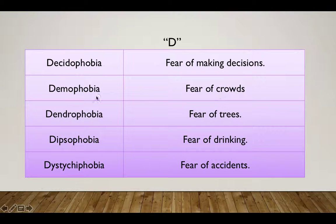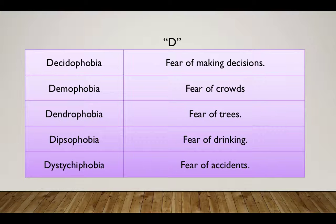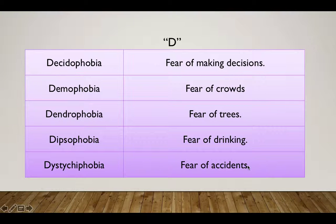Demographic dividend — you may have heard this term, which relates to people who can be put to work — so demographic relates to people and crowds, hence Demophobia is fear of crowds. Dendrophobia — fear of trees — you can remember this from dendrochronology, which is the internal study of trees by cutting them. So 'dendro' means trees. Dipsophobia — fear of drinking — like dipping a tea bag and drinking, so 'dip' relates to drinking. Dystychiphobia — fear of accidents.